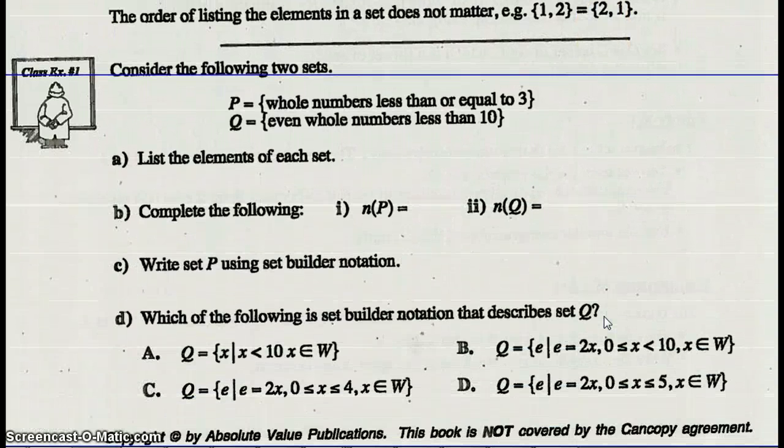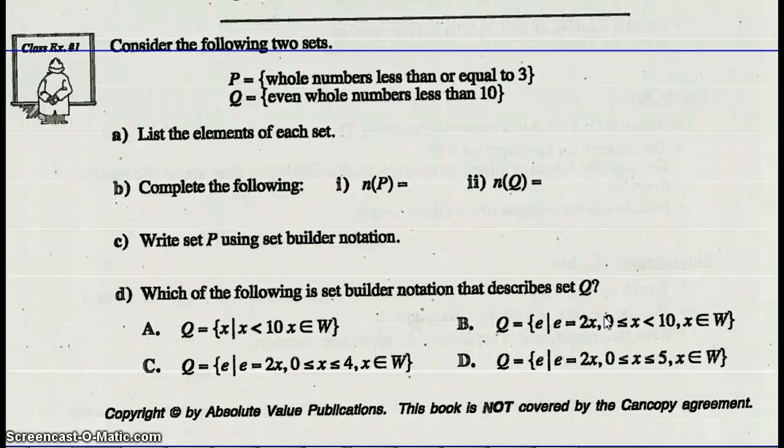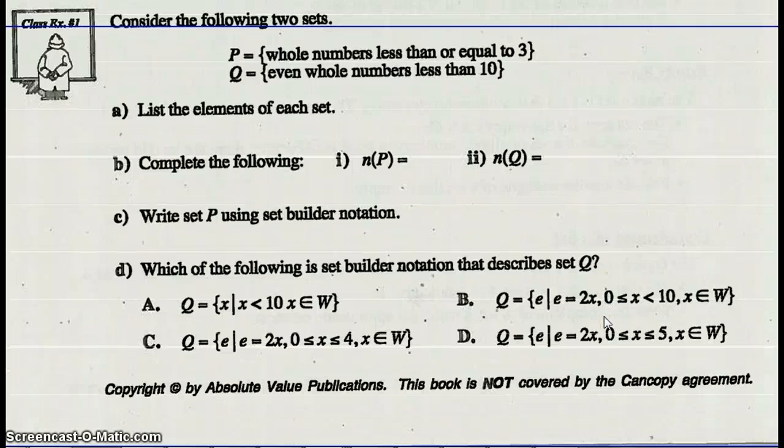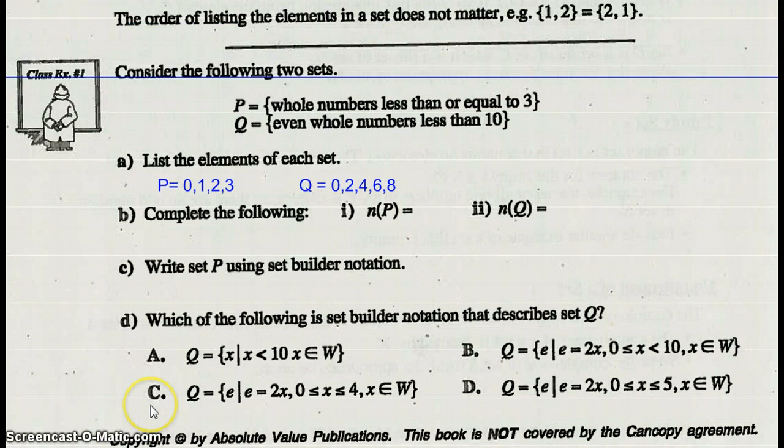Let's look at example 1. Consider the following two sets. P is the set of whole numbers less than or equal to 3. Q is the even whole numbers less than 10. The elements in P are 0, 1, 2, 3. The elements in Q are 0, 2, 4, 6, 8. There are four elements in P and five elements in Q.